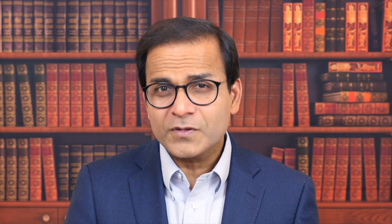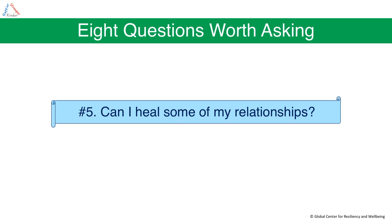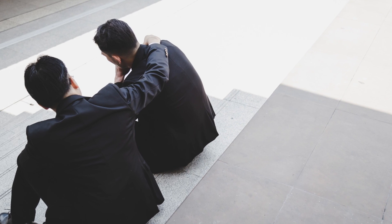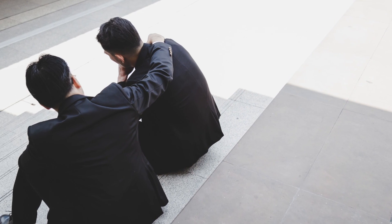The fifth question is: can I heal some of my relationships, both personal and professional? If you've been planning forgiveness for some time, now is the time to implement it — for the sake of your immunity. The idea is: the less emotional load you carry and the more nurtured, connected, and less lonely you feel, the better your immunity.